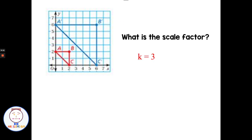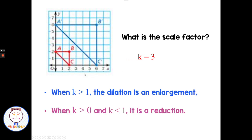So what is the scale factor? Our original triangle is the red one, A, B, C. The side A to B is 2. A prime to B prime — counting — is 6. So we went from 2 to 6. Two times what is 6? Two times 3. We can check on B to C: B to C is 2, and B prime to C prime is 6. Everything was multiplied by 3, so our scale factor is 3.